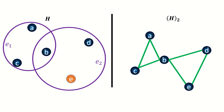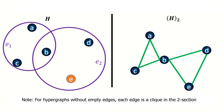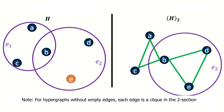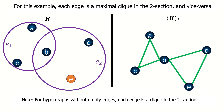We're all done! This is the two section of our hypergraph. Notice that for hypergraphs without empty edges, each edge in the hypergraph is a clique in the two section. In this case, each edge is a maximal clique in the two section and each maximal clique in the two section is an edge in the hypergraph.